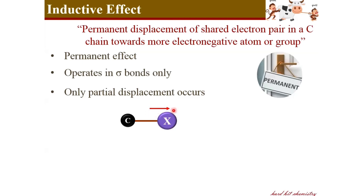Atom X drags the bonded pair of electrons towards itself to create a polarization. X becomes slightly negatively charged and the carbon atom becomes slightly positively charged. However, this polarization is only partial in nature — the electron pairs are not completely moving onto X, but are displaced towards X.